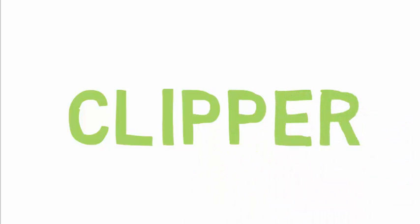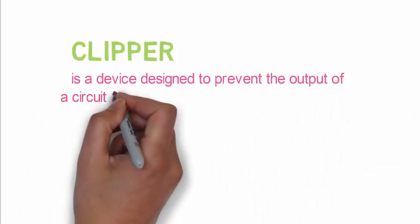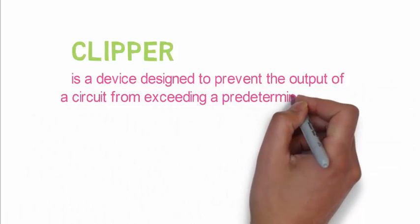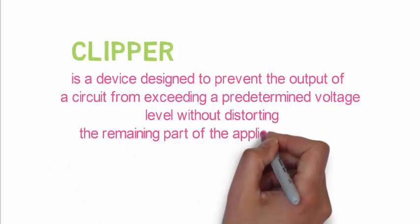If we want to define clipper in a single statement, then we can say that it is a device designed to prevent the output of a circuit from exceeding a predetermined voltage level without distorting the remaining part of applied waveform.